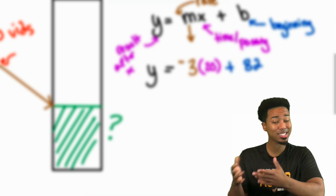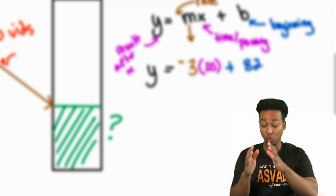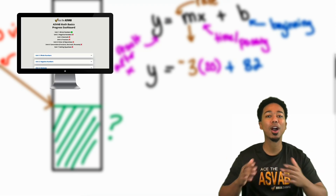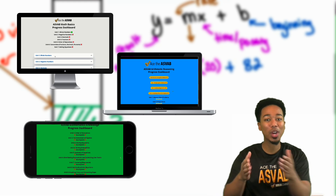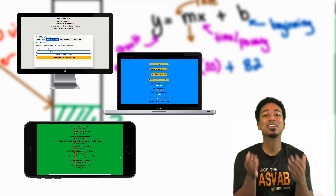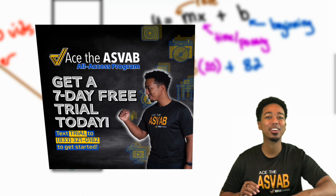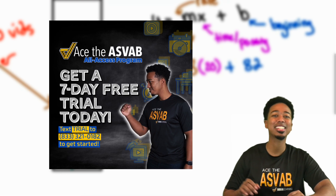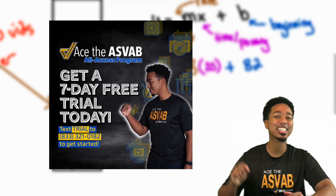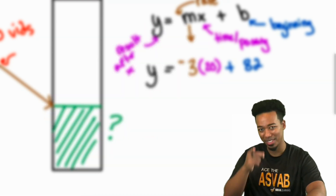The hardest part about practicing for the ASVAB is knowing when you're ready. Our full program has a progress dashboard letting you know exactly what you're good at and what you need to work on. You can join for free for a full week — no credit card required. Text 'trial' to 833-321-0182 or click the link in the description to get started.